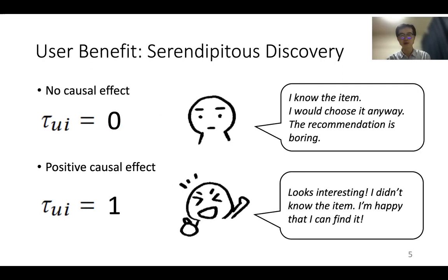So why do we care about the causal effect? Because it's beneficial to both users and service providers. For users, it can lead to the serendipitous discovery of items. When there's no causal effect, a user might feel: I know this item, I would choose it anyway — the recommendation is boring.